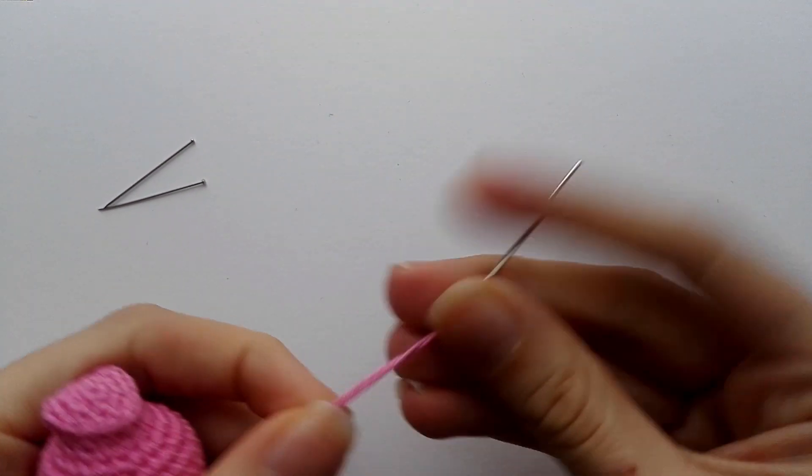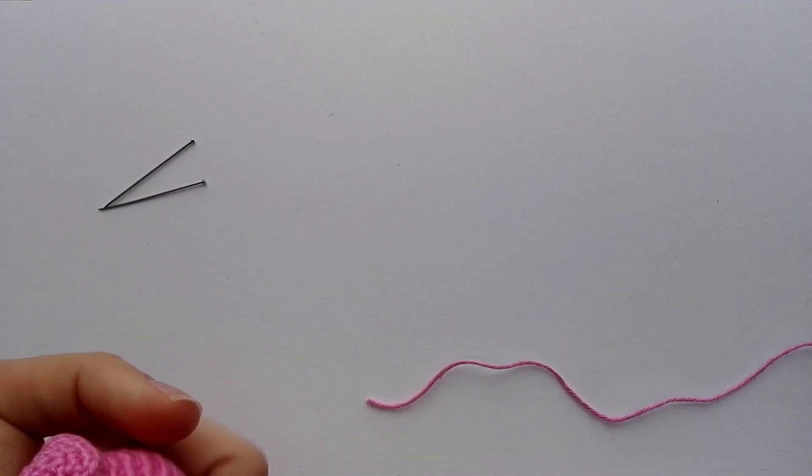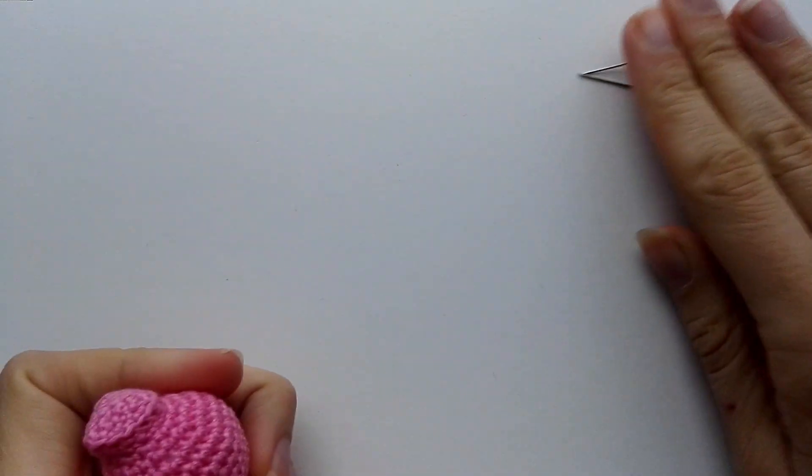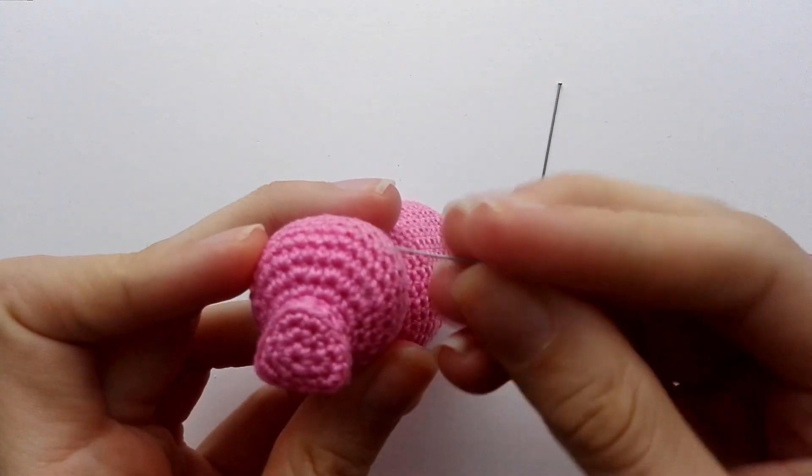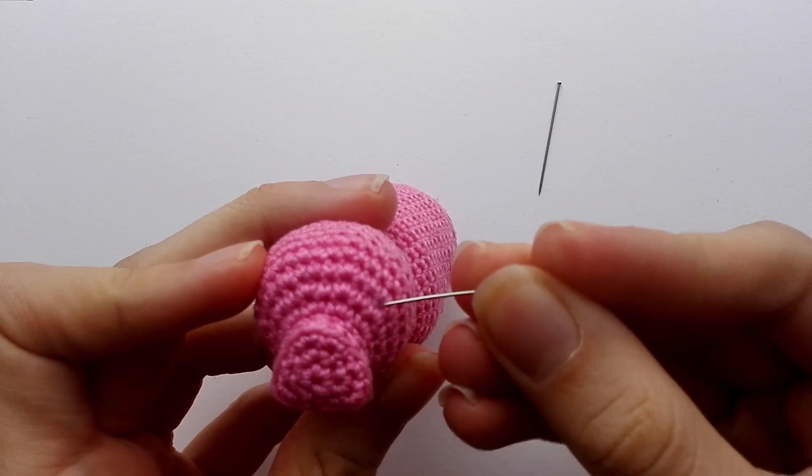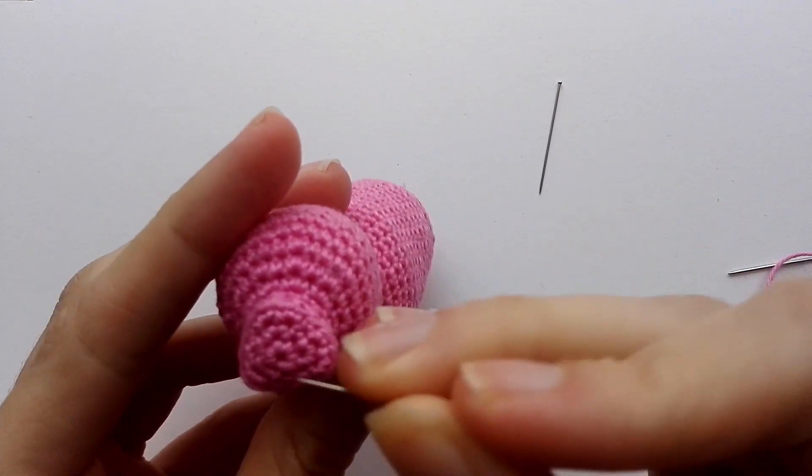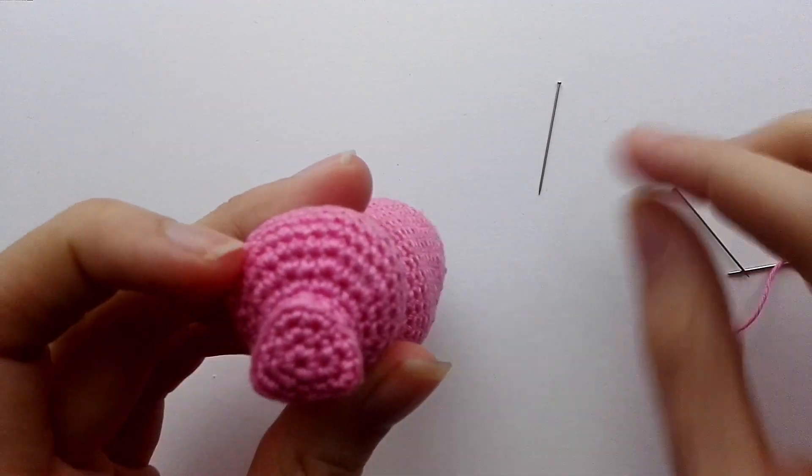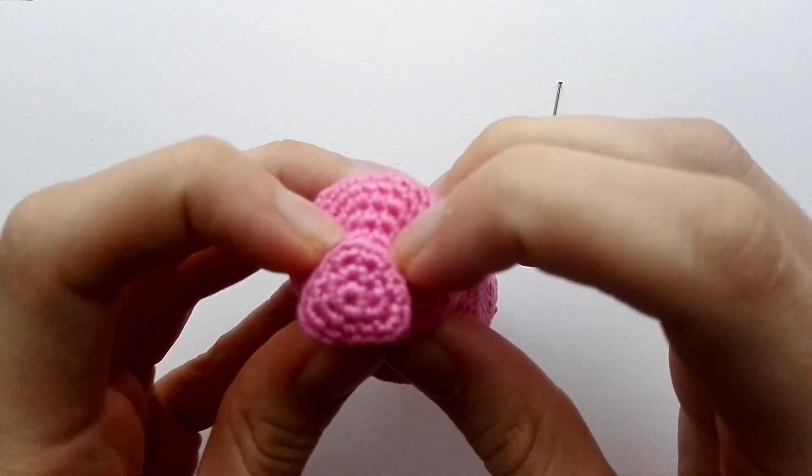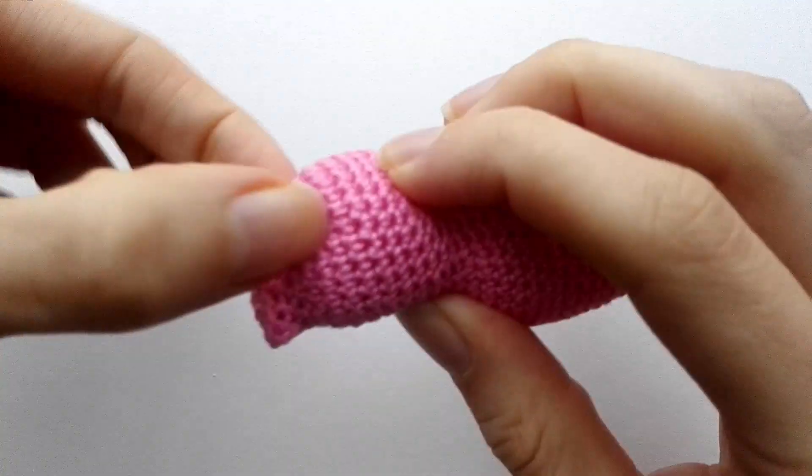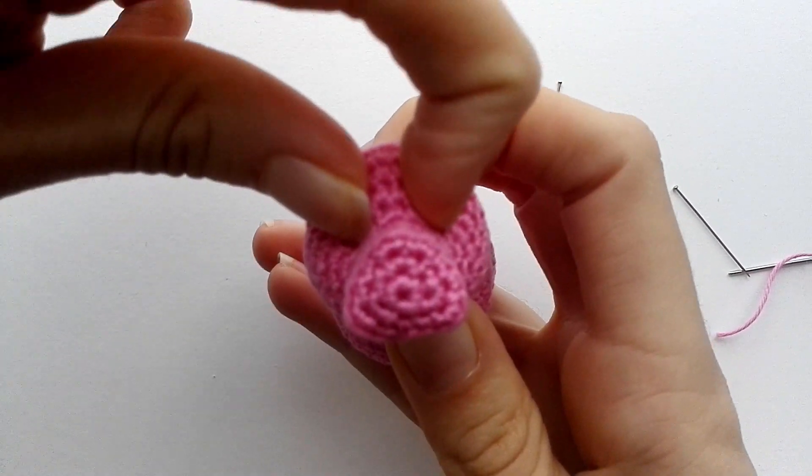So I took a needle which I already threaded. The pattern says to shape it in the seventh row and then seven stitches apart. So we're gonna first find out where we want the indents to be because the shaping is basically gonna be making it look a bit more like this, making two little indents here.